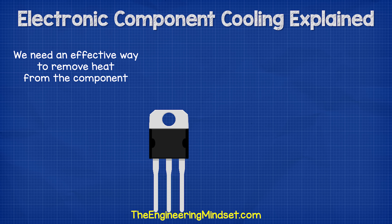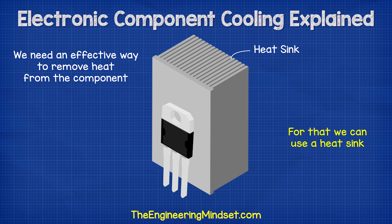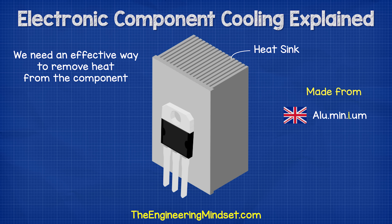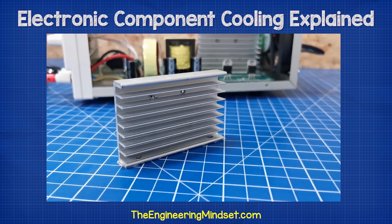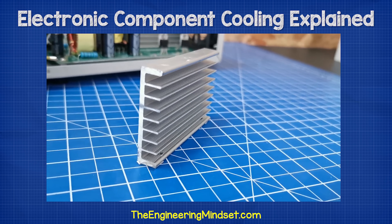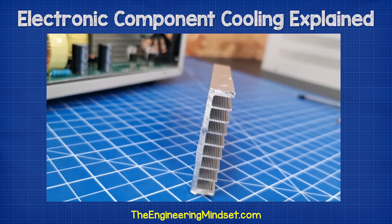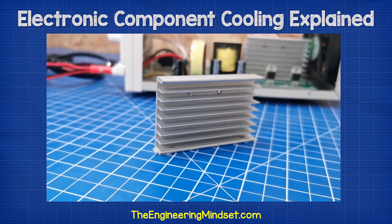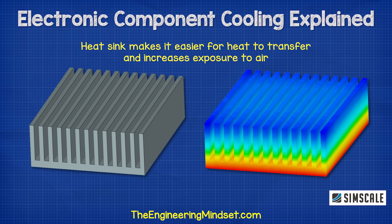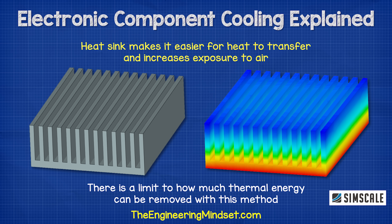We usually need a more effective way to get the heat out of the actual component. A popular method is to use a heat sink to provide passive cooling. This heat sink is usually made from aluminum. These heat sinks have multiple fins on them. The fins help to increase the surface area of the component to allow maximum exposure to more ambient air. The heat sink is made from a metal because this conducts heat well, much better than air. So by making it easier for more heat to escape and increasing the exposure to the air, we effectively cool down the component.